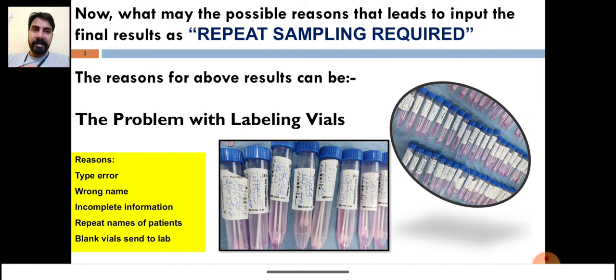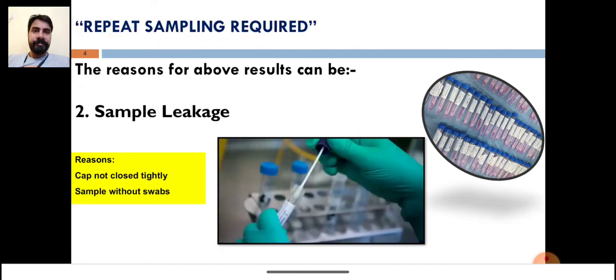The next reason for repeat sampling is sample leakage. The collection facility has collected the sample very well, but they just forgot to tightly close the cap because this is a liquid.